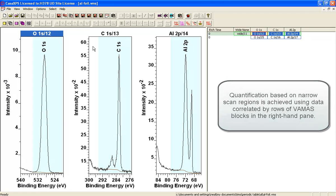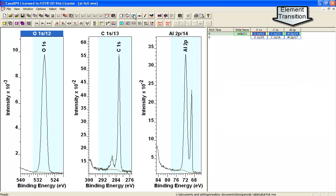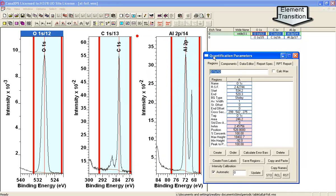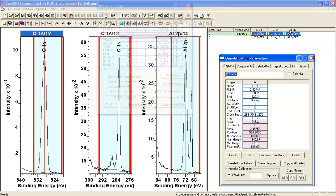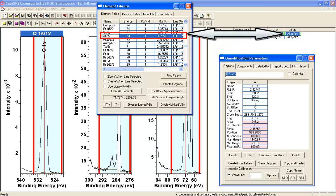The relative sensitivity factors have been brought in from the element library, and the reason that this can happen is because each one of these spectra have the correct element transition assigned to the VAMAS blocks. The element transition is what you see in the top part of the display on the right hand side. So this connection with the actual meaning for these data